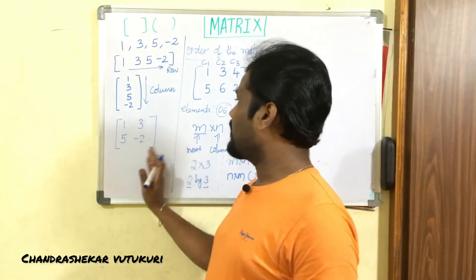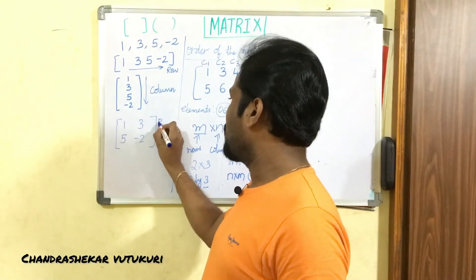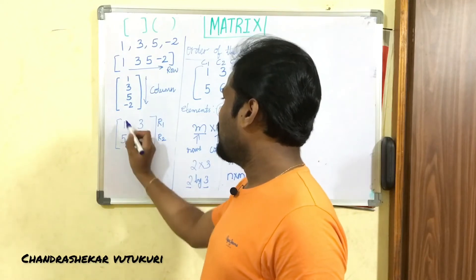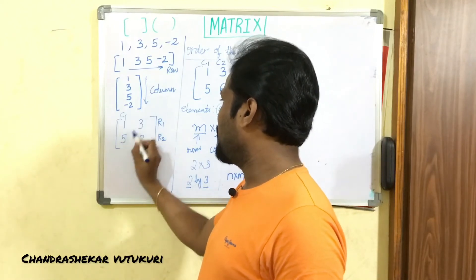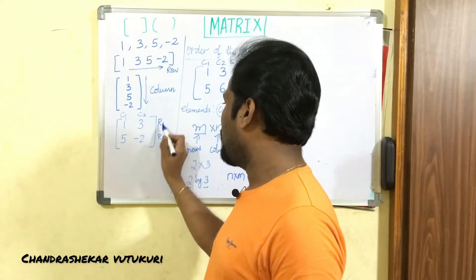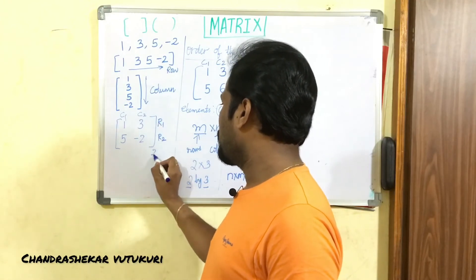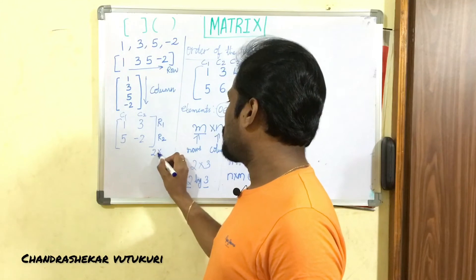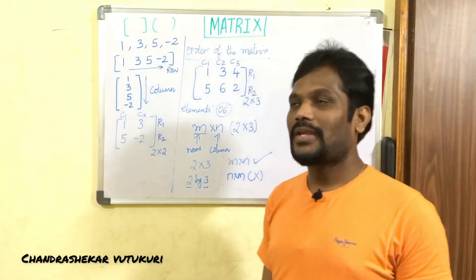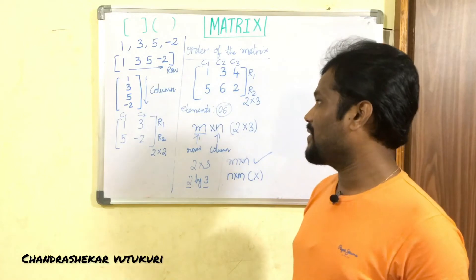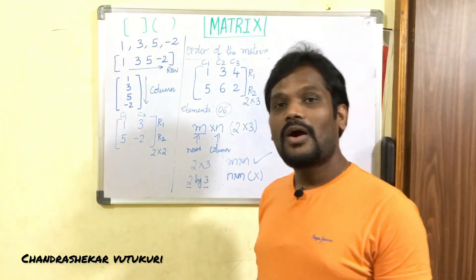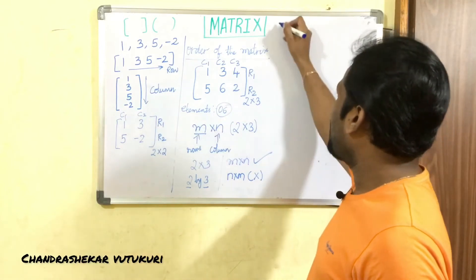Let us also look at the square matrix example. It has row 1 and row 2 along the horizontal, and column 1 and column 2 along the vertical. Since it has 2 rows and 2 columns, it is a 2 by 2 matrix. This is how we determine the order of a matrix.